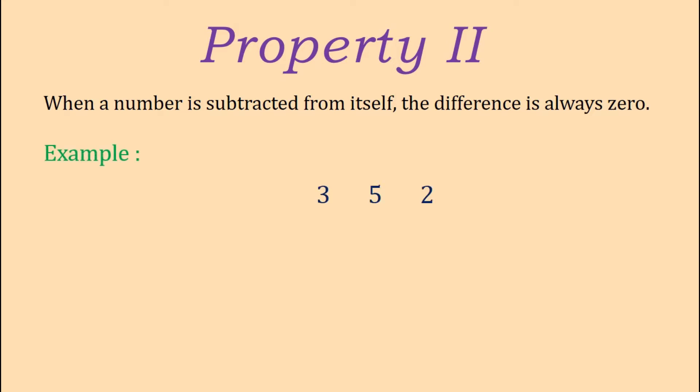If we subtract 352 from 352, we get the answer as zero. So this example clearly shows that when we subtract a number from the number itself, the difference is zero.